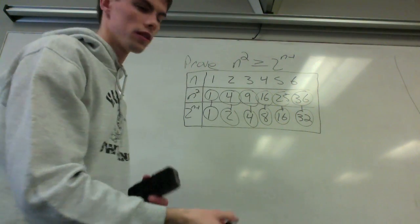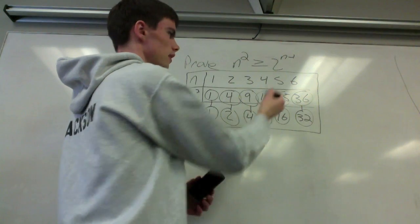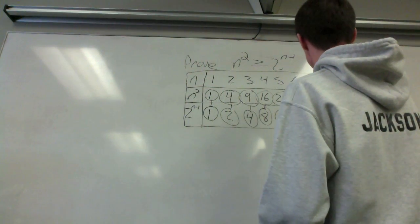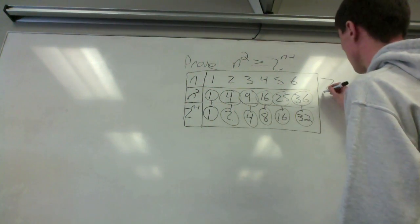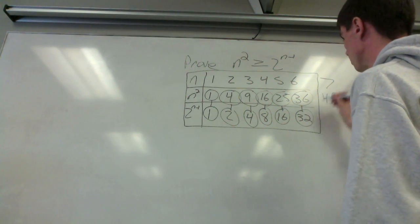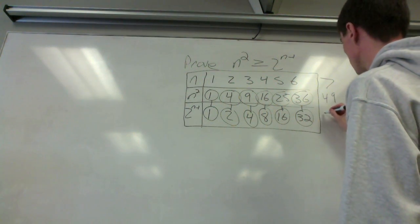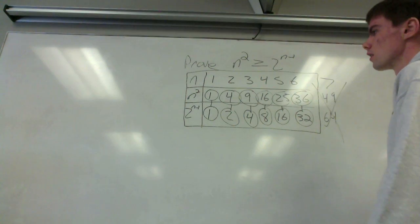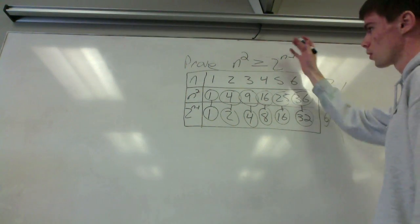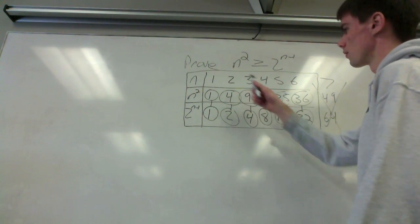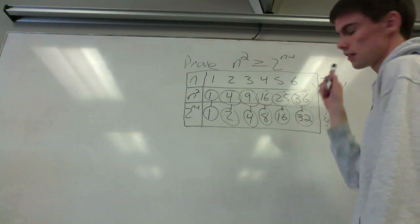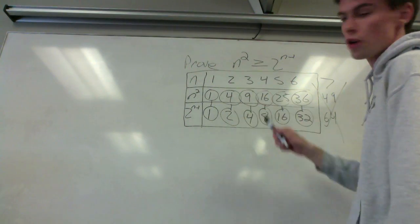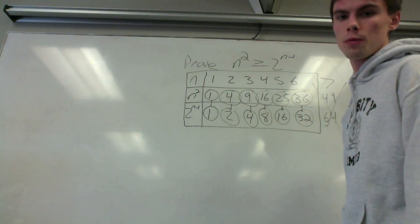You can see why the domain was specified as up to 6. If we look at n equals 7, which is outside the range: n squared is 49, but 2 to the n minus 1 is 64, which does not satisfy the inequality. So it's proved that on this interval, for positive integers less than 7, n squared is greater than or equal to 2 to the n minus 1 for each case.